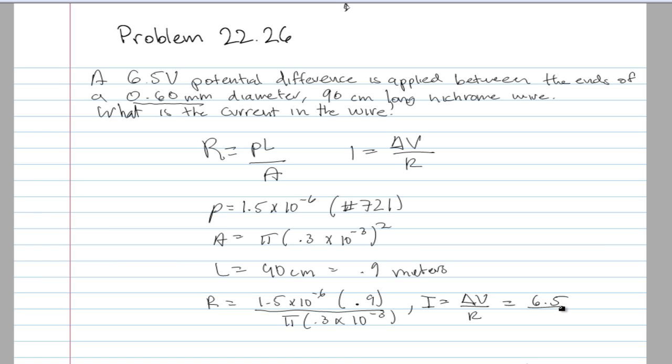So 1.5 times 10 to the negative 6 times 0.9 divided by pi times 0.3 times 10 to the negative 3 squared gives you 4.77, which yields the final answer of 1.4 amps.